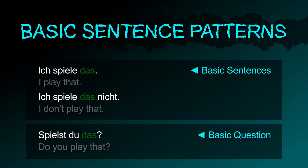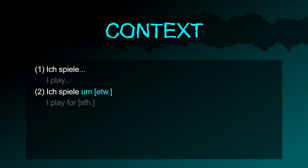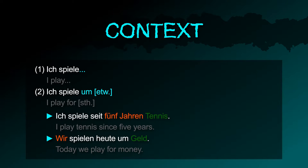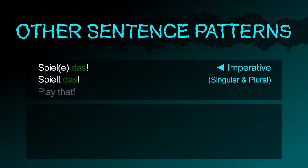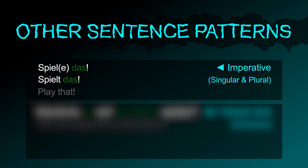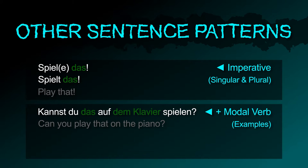In context, simply say what you're playing. If you're playing for something, use the preposition um. Examples: ich spiele seit fünf Jahren Tennis; wir spielen heute um Geld. Imperative forms: spiele das, spielt das, kannst du das auf dem Klavier spielen?